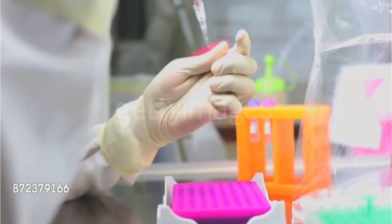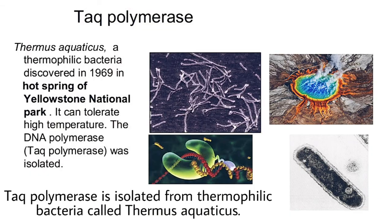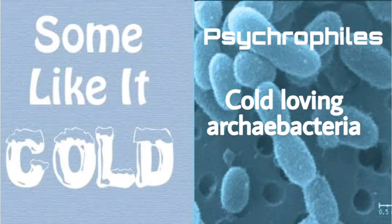The thermophilic Archaea called Thermus aquaticus is commonly used in the PCR technique. It is used to produce an enzyme called Taq polymerase.